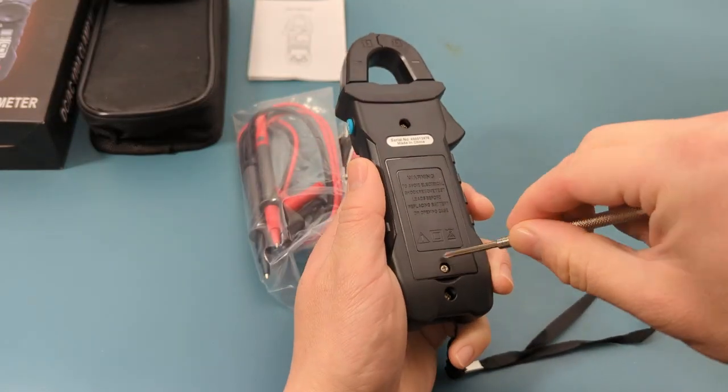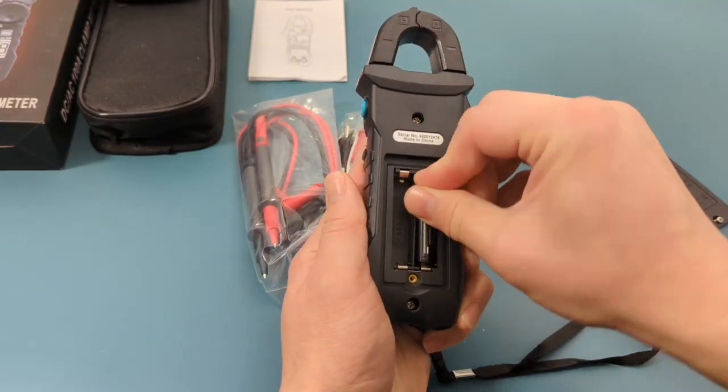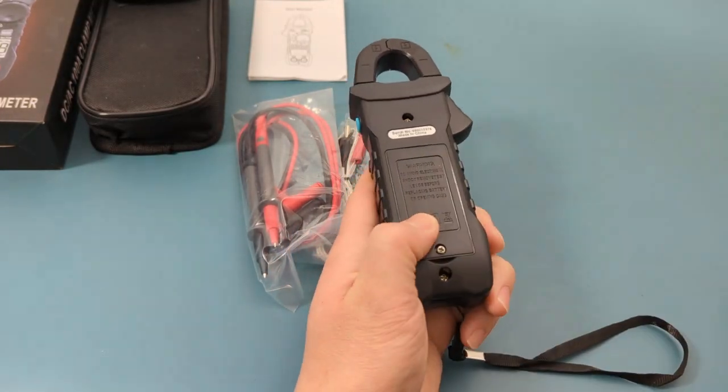Insert two AAA batteries to power the meter. The batteries are not included. Use a Phillips screwdriver to open the back cover.